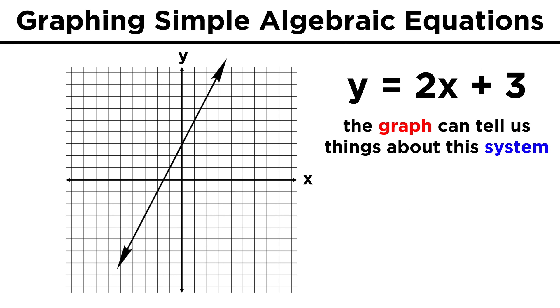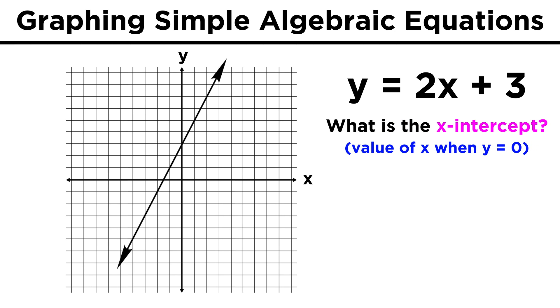Now the interesting thing about graphing these equations is that we can use the graph to make inferences about the system, instead of having to do any math. Say we take this same equation, and we want to know the value of x when y equals zero. We can trace along this line until it crosses the x-axis, and right where it touches the x-axis is where y must equal zero.